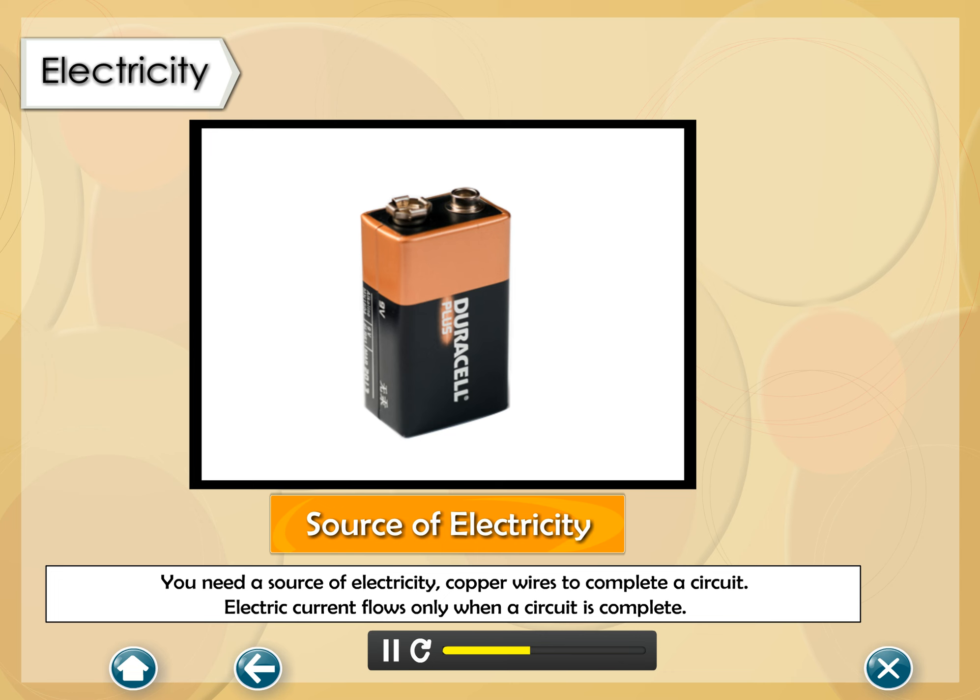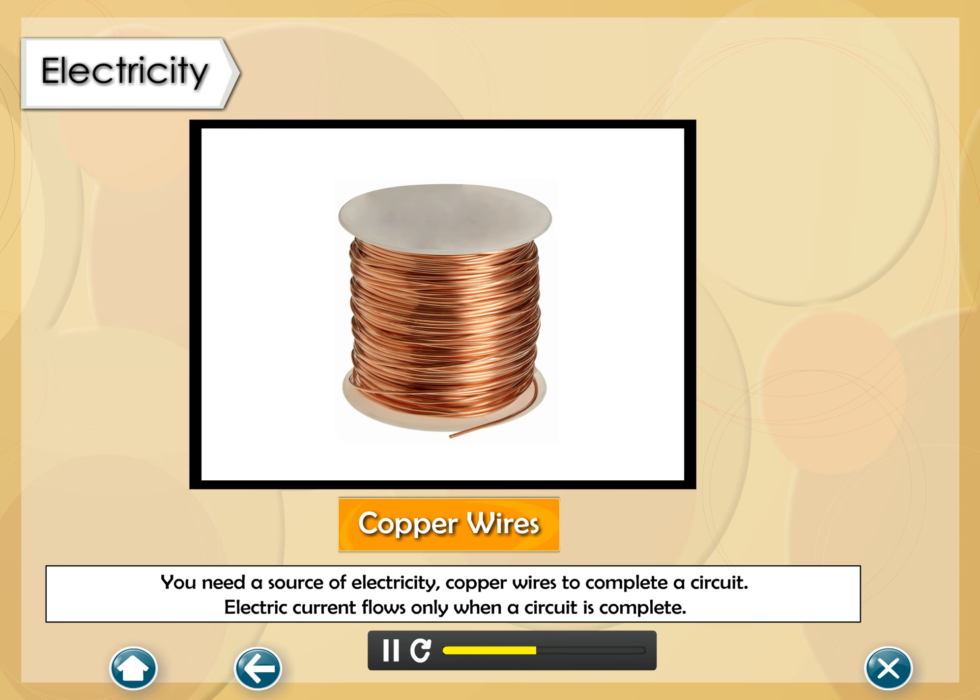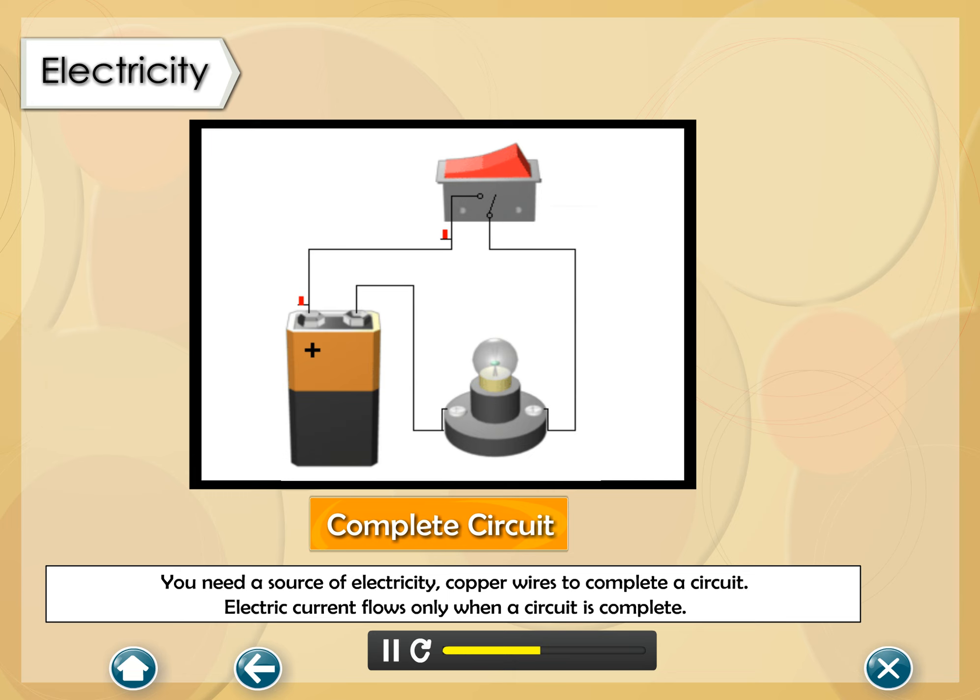You need a source of electricity, copper wires, to complete a circuit. Electric current flows only when a circuit is complete.